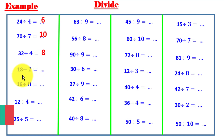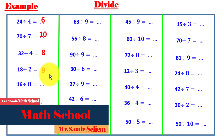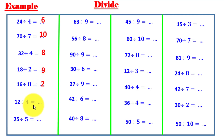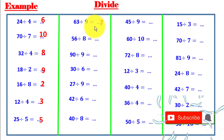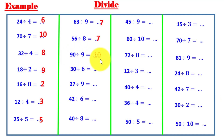It's very important to revise the multiplication table. 12 divided by 4 equals 3, because 3 times 4 equals 12. 25 divided by 5 equals 5, because 5 times 5 equals 25. 63 divided by 9 equals 7. 56 divided by 8 equals 7. 90 divided by 9 equals 10. 30 divided by 6 equals 5. 27 divided by 9 equals 3.